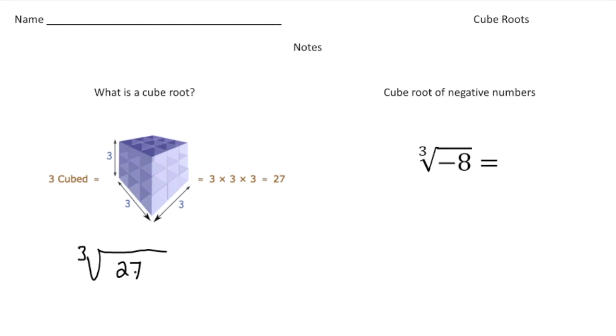The question is, what number times itself, times itself again, equals 27? And this single in here will give us the cube root. And of course, we know it's going to be 3, because 3 times 3 times 3 will give us 27.